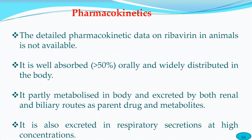Pharmacokinetic data for ribavirin in large or small animals is limited. However, it is well absorbed orally — more than 50% — and well distributed in the body. It is metabolized and excreted by both renal and biliary routes as parent drug and metabolites. It is also excreted in respiratory secretions at very high concentrations, making it a drug of choice in coronavirus infections.